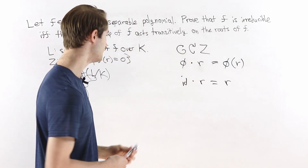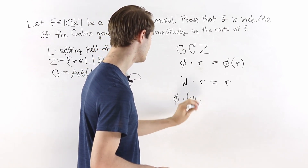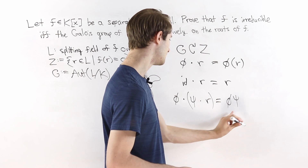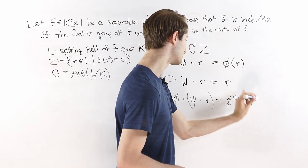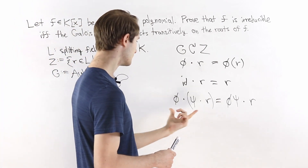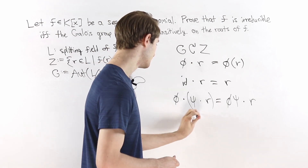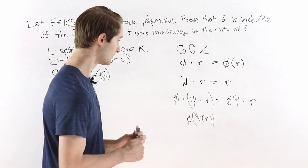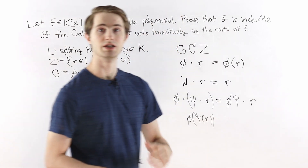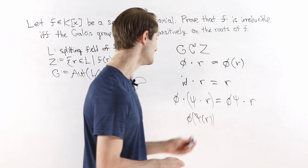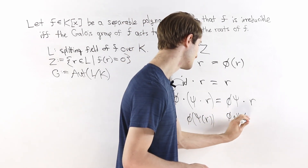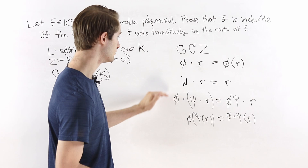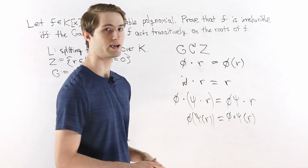The second condition is that if we take two automorphisms φ and ψ and apply them in sequence, this should equal multiplying them first and then applying that product. On the left side, ψ applied to r gives ψ(r), and then φ applied to that gives φ(ψ(r)). On the right side, multiplication in the automorphism group means function composition, so this is φ∘ψ applied to r — which is exactly the same. So both conditions are satisfied and this is a valid group action of G on Z.